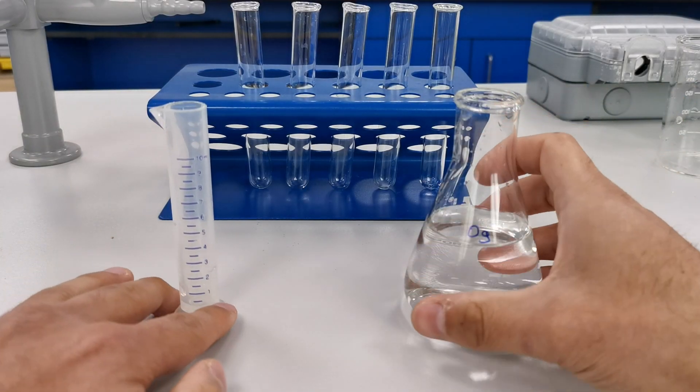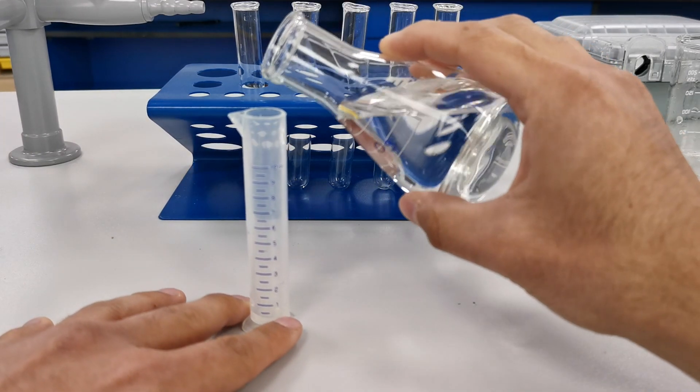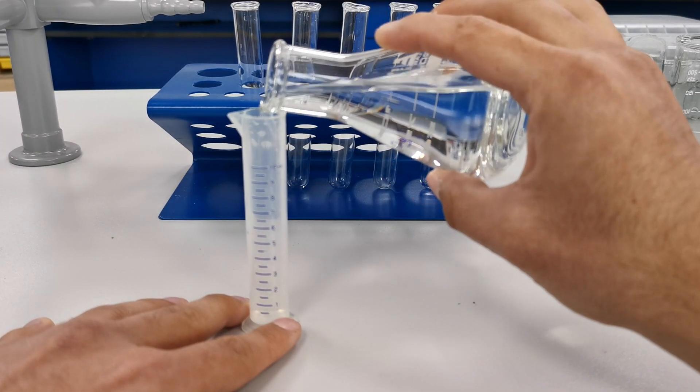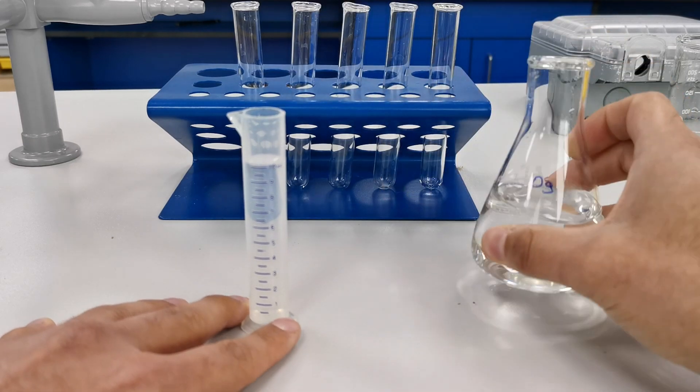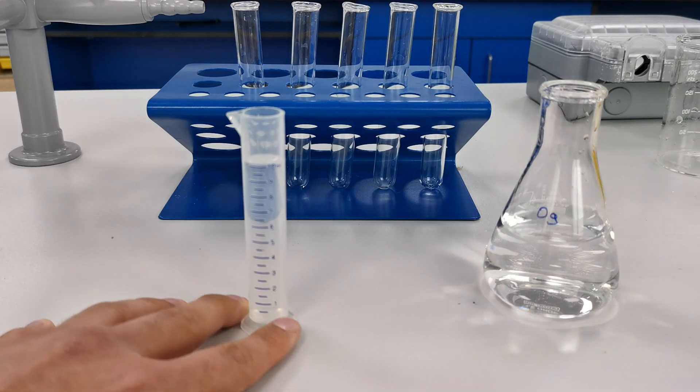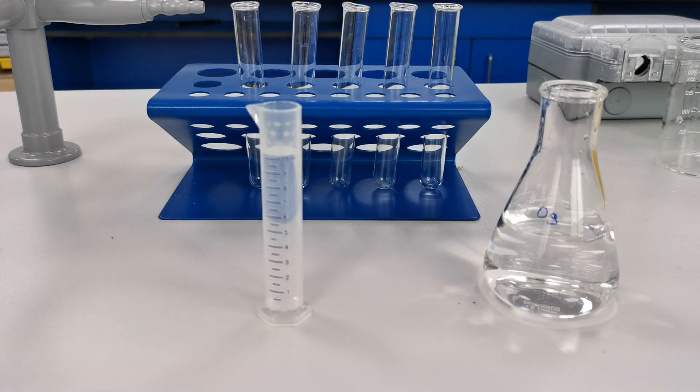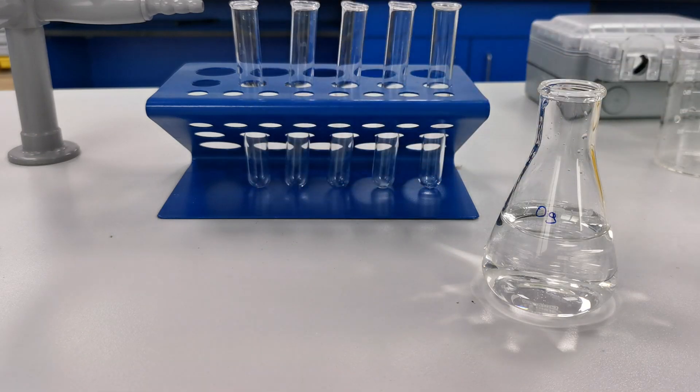I'm going to start by measuring ten centimeters cubed of the lowest concentration of sugar solution, which is zero molar. So this is just distilled water. And remember to measure these at eye level to avoid parallax errors. I'm then going to pour this into the test tube.